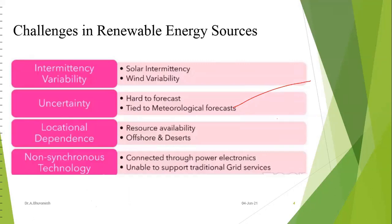What are the main challenges in renewable energy? Intermittency and variability: we cannot predict the exact amount of wind velocity or solar irradiation on any particular day. Even the meteorological department cannot predict exactly; only approximate forecasts are possible.